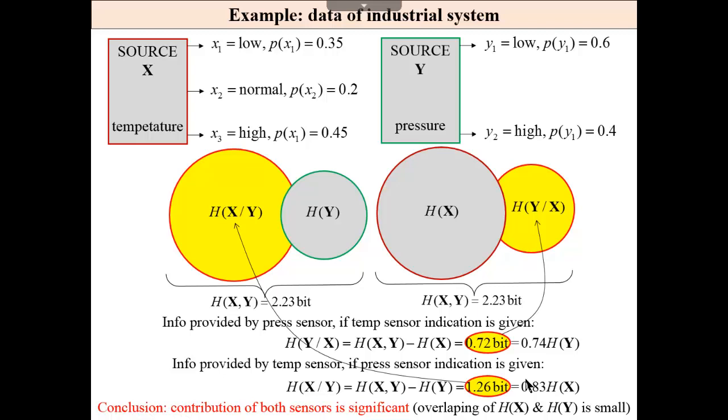Now, this is a graphical interpretation of this. Please observe that these two circles are not overlapping much. If they are overlapping, then practically means that there is no sense to install the second sensor. The less is overlapping area, the better.